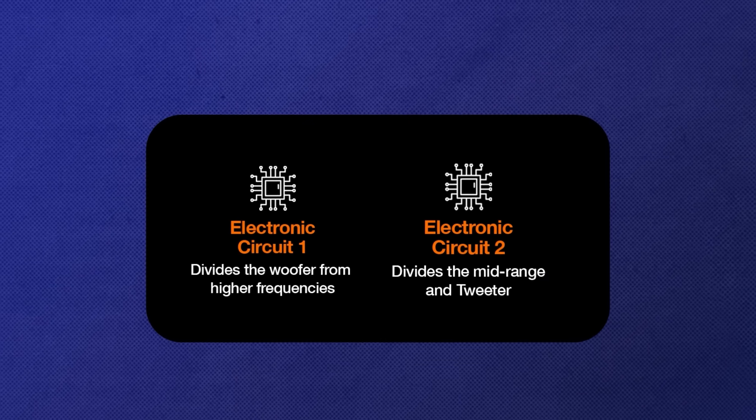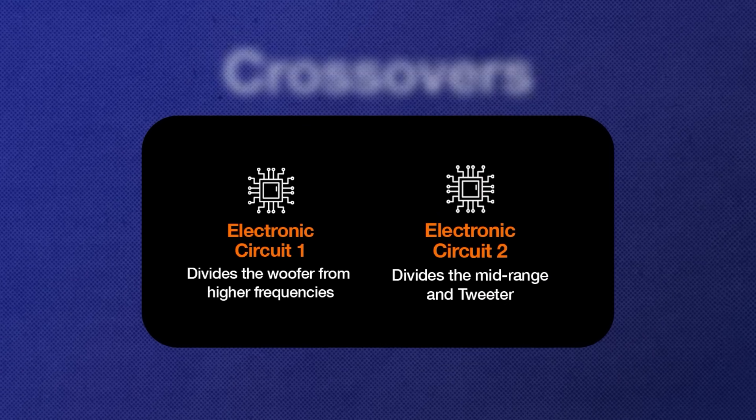So there are two pieces of electronic circuits one after the other. One that sends everything lower than 200 to the woofer and everything above that to these two and a second one that further separates your tweeter and your mid range. And those two pieces of electronic circuitry are called crossovers.